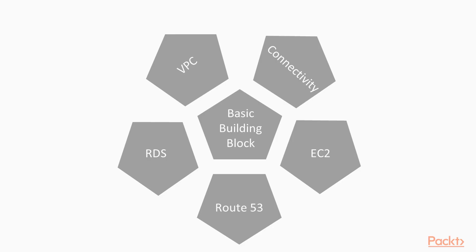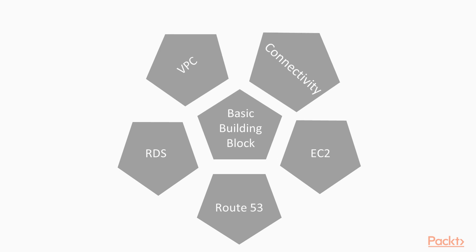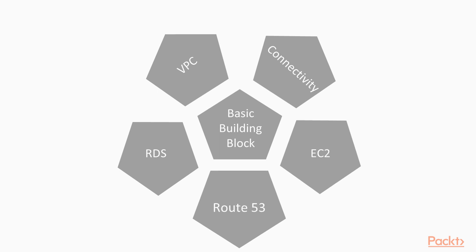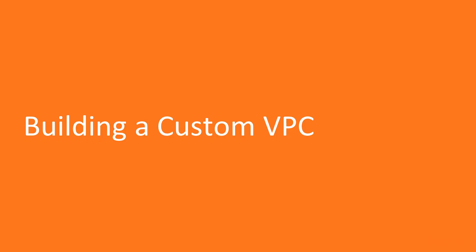In this section, we're going to cover the basic building blocks: VPCs, connectivity, EC2, Route 53, RDS — all the things that you should be familiar with. You can look at this as something that helps you remember certain characteristics, really as a refresh of your basic Amazon knowledge. So if you're ready, let's get started with video one and we'll look at how we build a custom VPC.